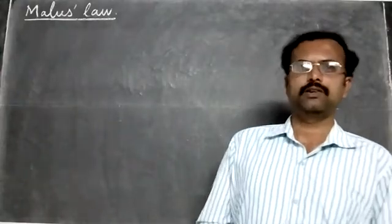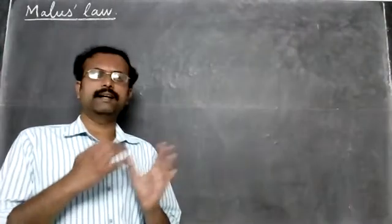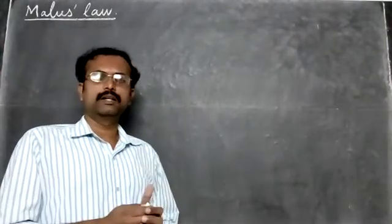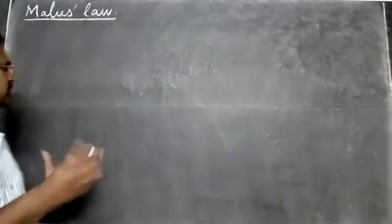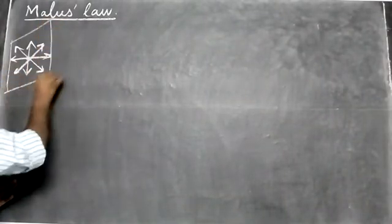Let us study Malus's Law. First we'll see an example, then we'll go to the statement. We'll take unpolarized light — the source gives light in all directions. This light vibrates in all the planes, so we say this is unpolarized light. The plane of vibration is drawn here.